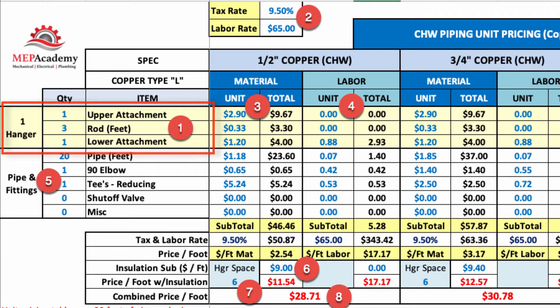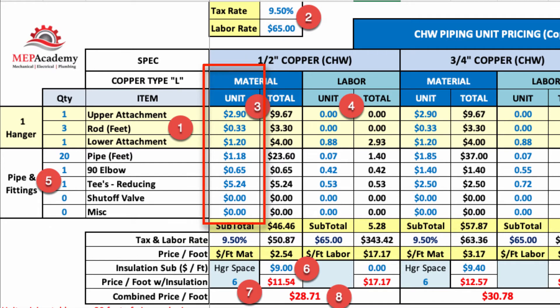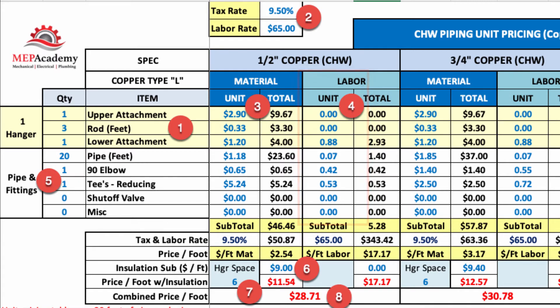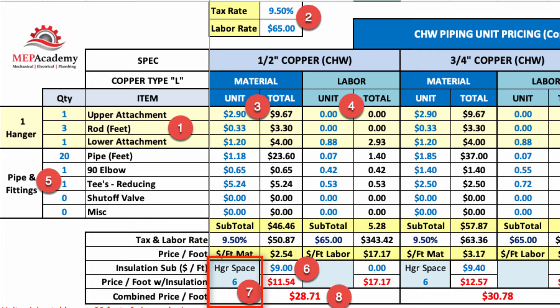Number one, there's a place to put your tax rate and hourly rate shown as number two. For each size pipe and material type you would insert a unit cost for material — item 3 — and a unit of labor for the installation of that item for each size. The chart goes from a half inch all the way up to 14 inches, so depending on the size of your pipe you would put the correct corresponding material cost and labor fractions. Under item number six there's a place for you to put the cost per linear foot of insulation, so you can build your unit cost with or without insulation. Item number seven is the hanger spacing.